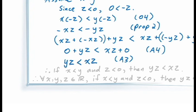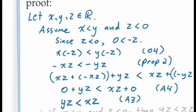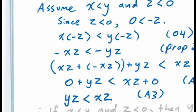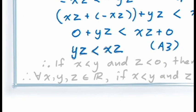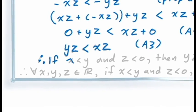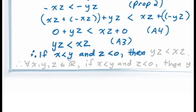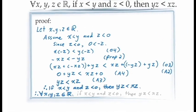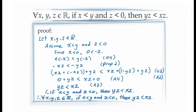At this point, the principle of conditional proof says that since we assumed the antecedent and demonstrated the consequent, we can make the conclusion: therefore, if the antecedent is true, then the consequent is true. And since all of this was done for arbitrary values of x, y, and z, the principle of universal generalization allows us to conclude this is true for all x, y, and z in the real numbers. And this completes the proof.